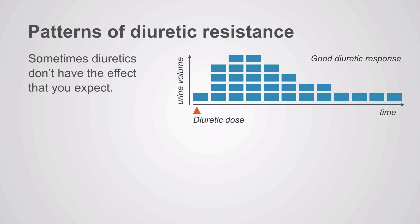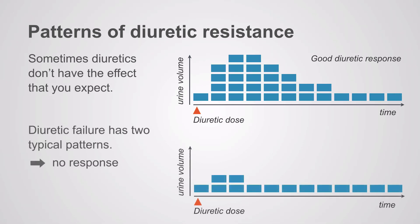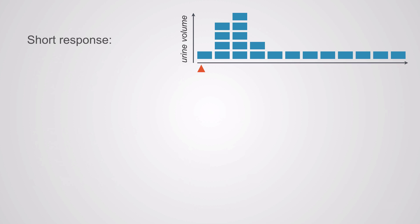Sometimes diuretics don't have the effect that you expect. Here's an example of a good diuretic response. Diuretic failure has two typical patterns. The first is you give the drug and get no response. The other is you give the drug and get a very short response, so you don't get enough diuresis over 24 hours. So there are two different responses for this diuretic resistance.